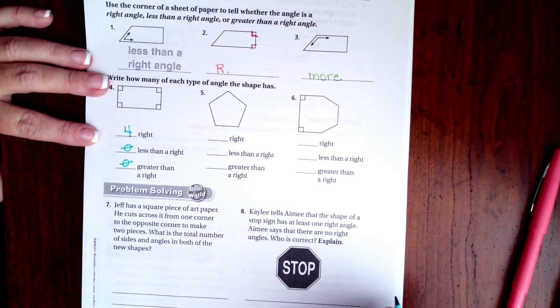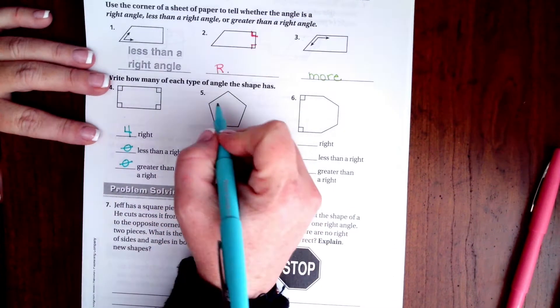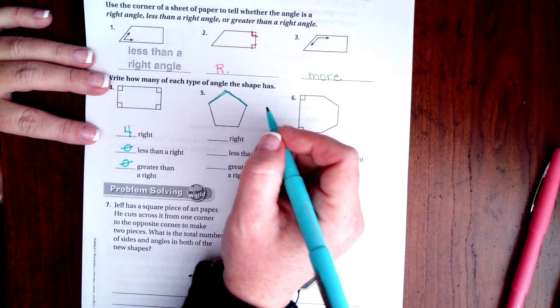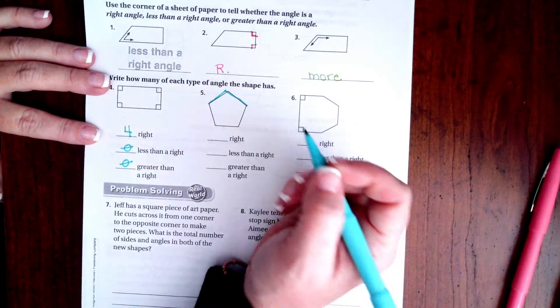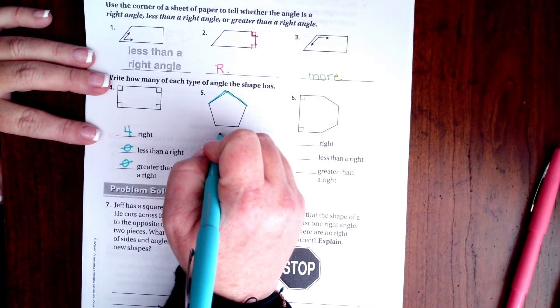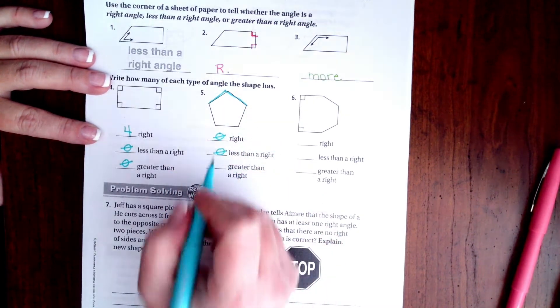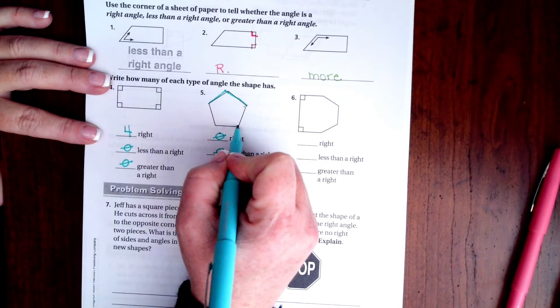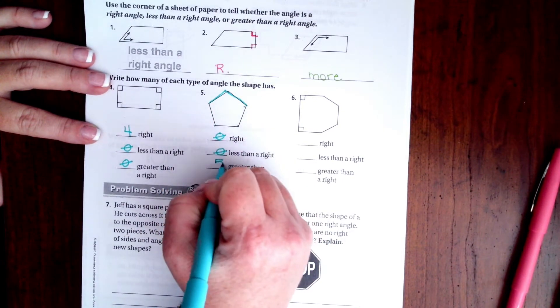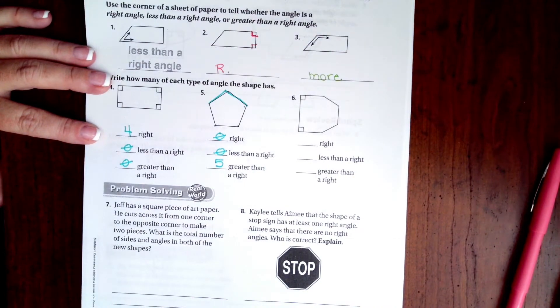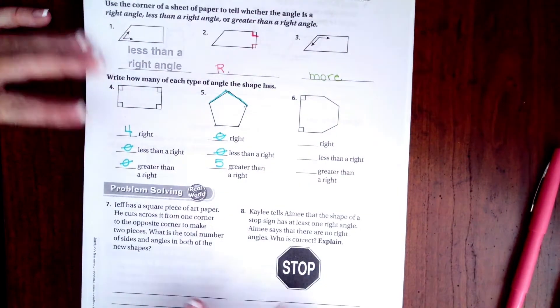On this one, each one of these angles is the same and they're all more than a right angle. So there are no right angles, there are no less than right angles, but there are one, two, three, four, five angles that are greater than a right angle. You guys try and do number six.